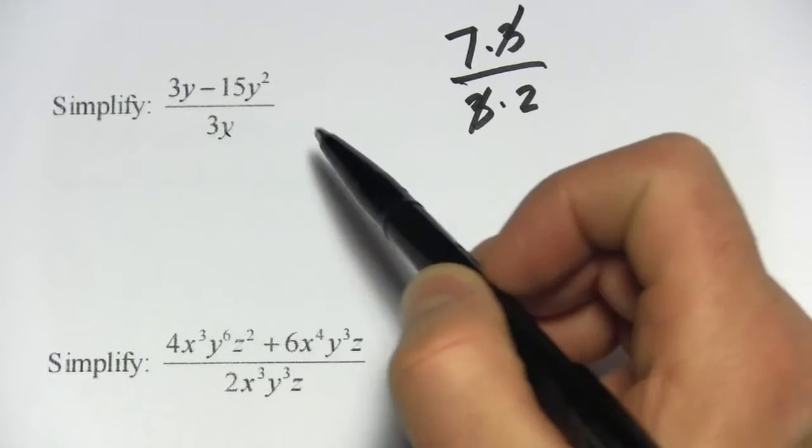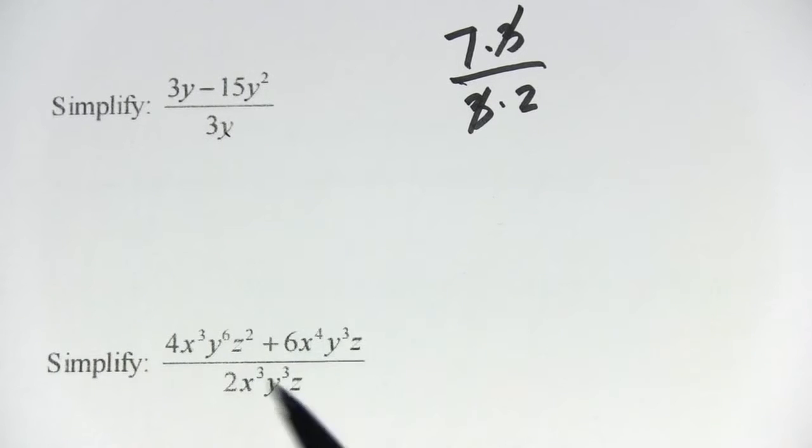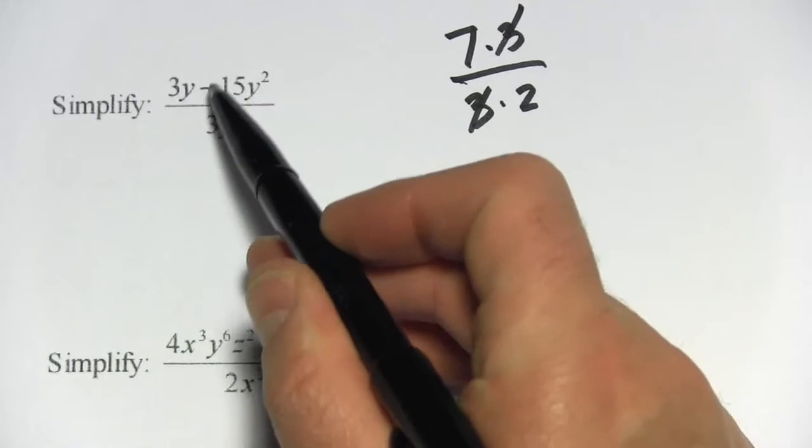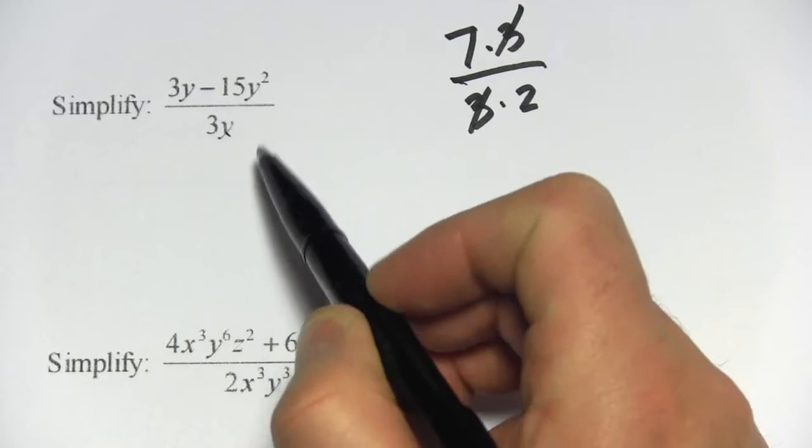Well, this second term, 15y squared, actually does have a 3y inside it and all we need to do is rewrite this. This is a multiplication problem.